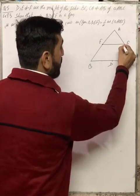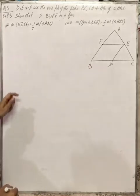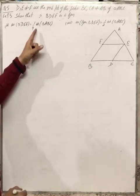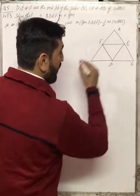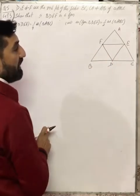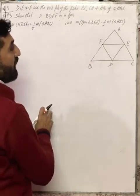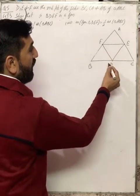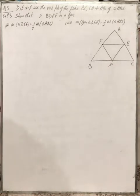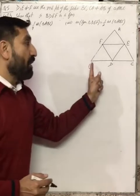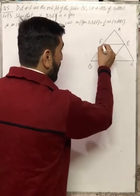So let's join them. This is B, D, E, F which we need to prove. If we join it, then you will have a triangle D, E, F. We need to prove that the area of triangle DEF is 1/4 of triangle ABC. So we need to show that DEF is 1/4 of ABC.